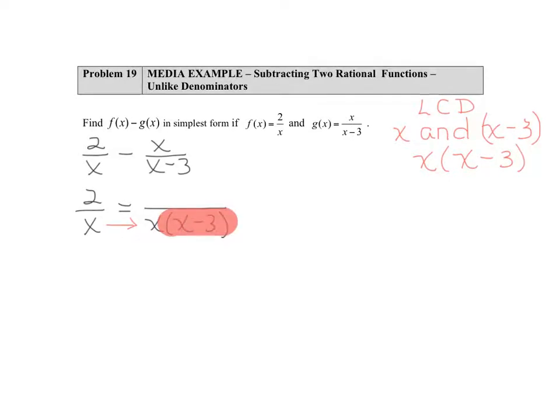So that meant the denominator got built up by an x minus 3. To maintain the balance here, we need to build up the numerator by x minus 3. So that will give us a new numerator of 2 times x minus 3.